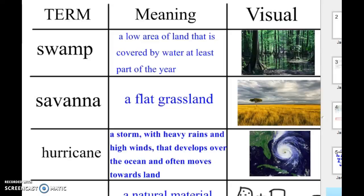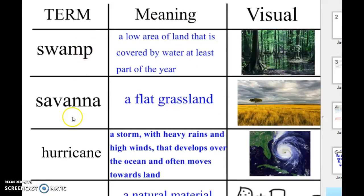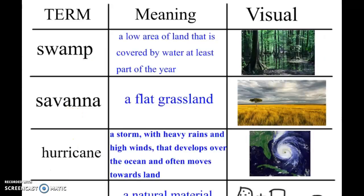You should have in class done these three words — swamp, savannah, and hurricane — already. You may not have gotten the pictures for them, but you should have those ones down first. If at any time you need to pause this video, do that so that you can easily write down the words.